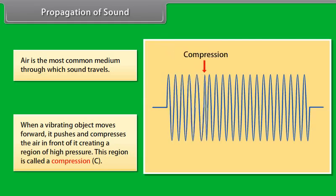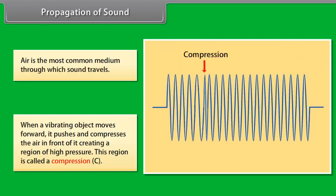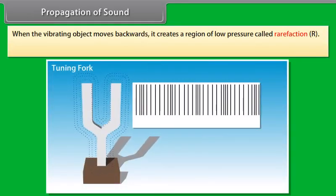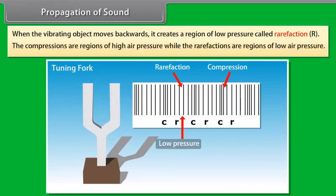When a vibrating object moves forward, it pushes and compresses the air in front of it, creating a region of high pressure. This region is called a compression. And when the vibrating object moves backwards, it creates a region of low pressure called rarefraction. The compressions are region of high air pressure, while the rarefractions are regions of low air pressure. Look at this image. It shows a sound wave created by a tuning fork and propagated through the air in an open tube. These are the regions of compression and these are the regions of rarefaction.